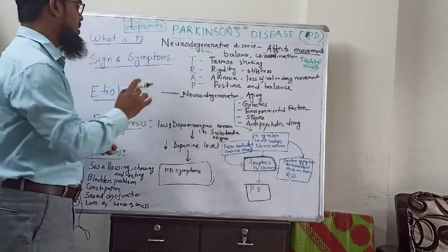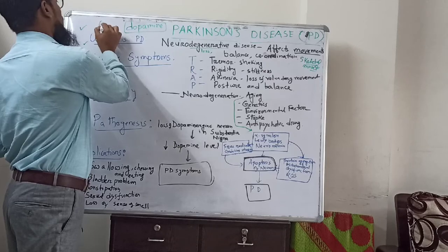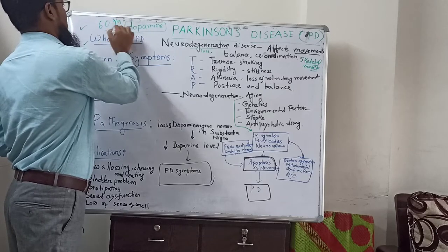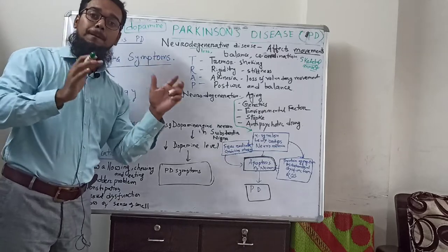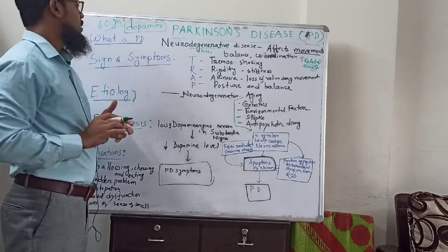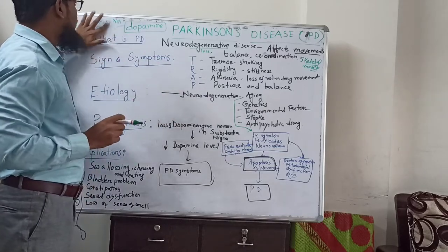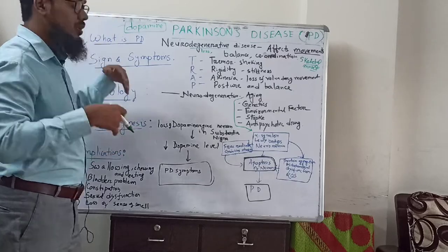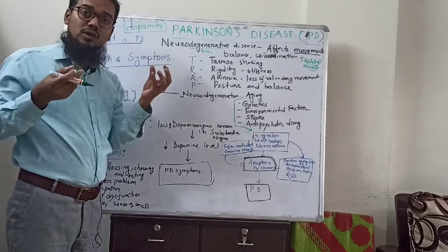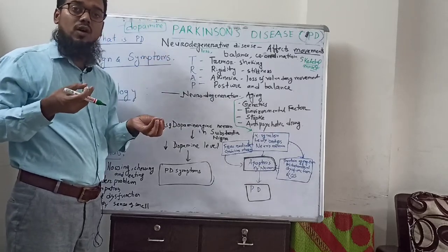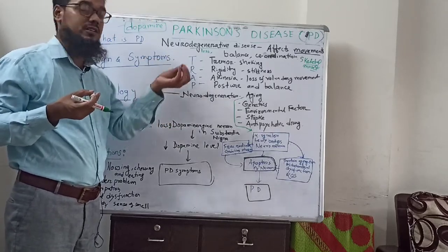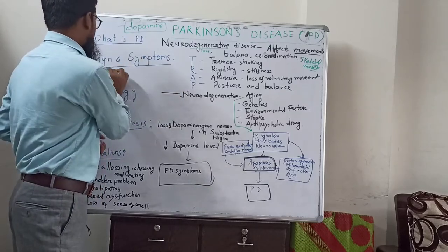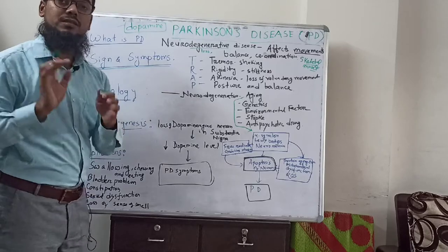Parkinson's disease mainly affects older people aged above 60 years and is more common in men than women. It is one type of aging or old age disease, because during old age, neurons also automatically get lost or destroyed — degeneration occurs. Now, what are the signs and symptoms of Parkinson's disease?